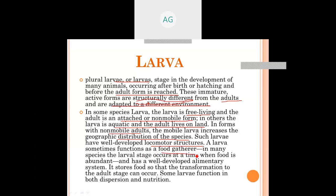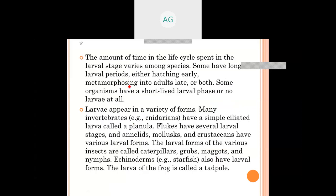A larva sometimes functions as a food-gatherer. In many species it has a well-developed alimentary system and stores food so that the transformation to the adult stage has sufficient energy. Some larvae function in both dispersion and nutrition. The amount of time spent in the larval stage varies from species to species — some have very long larval periods.